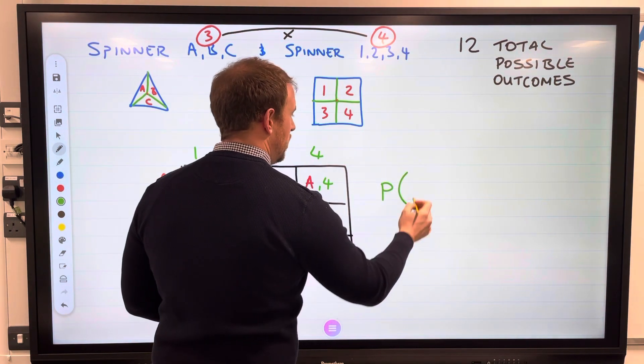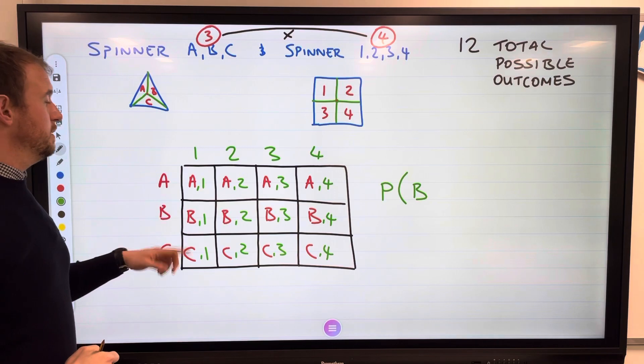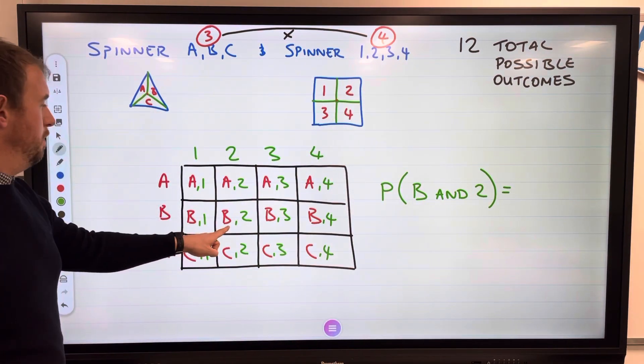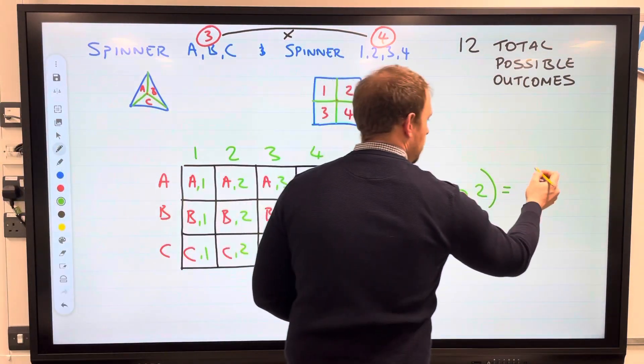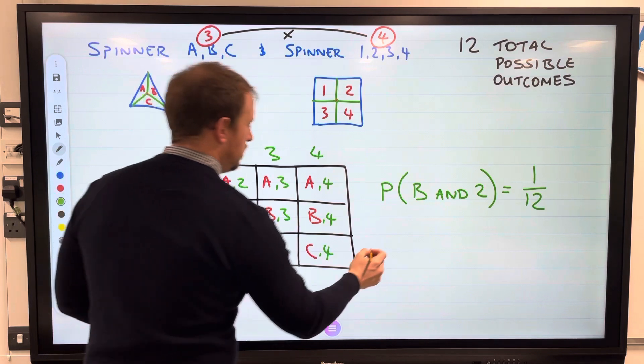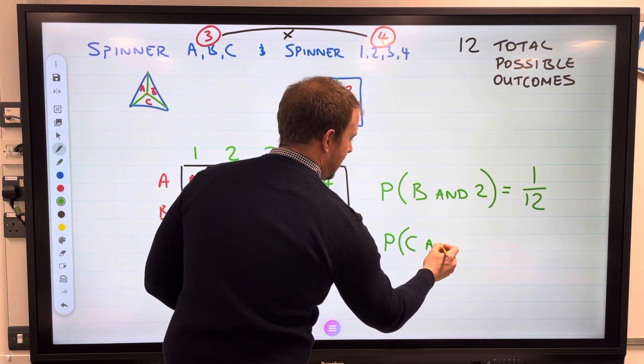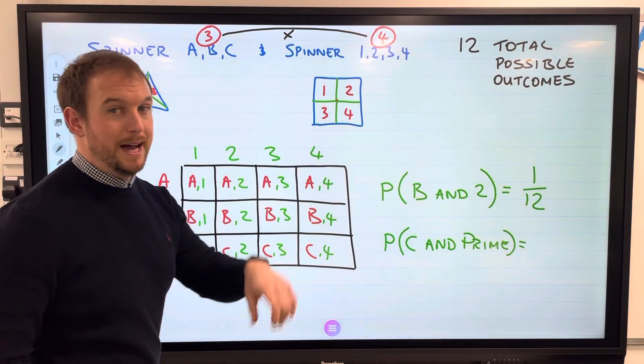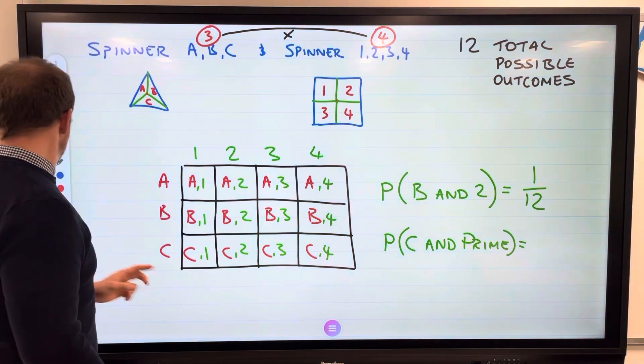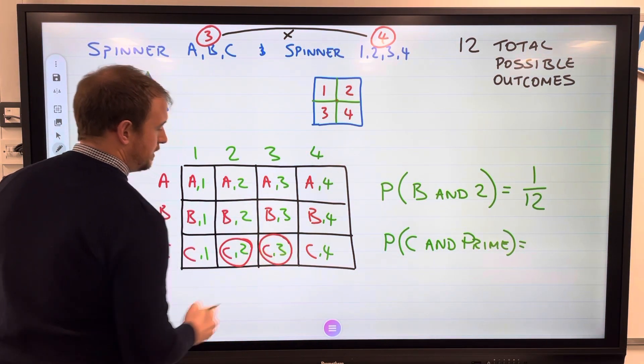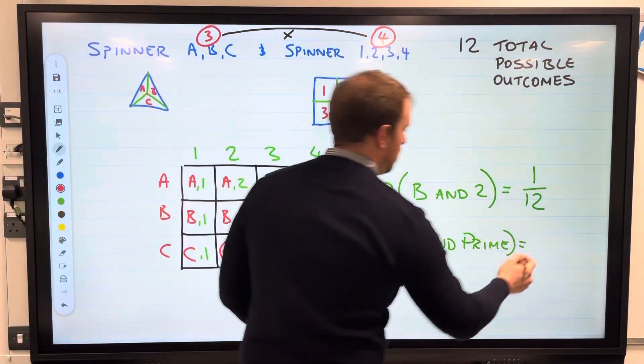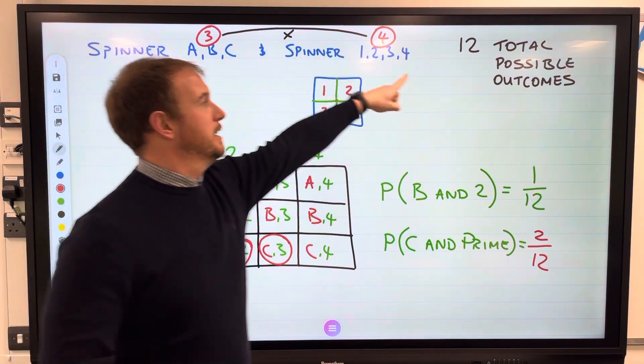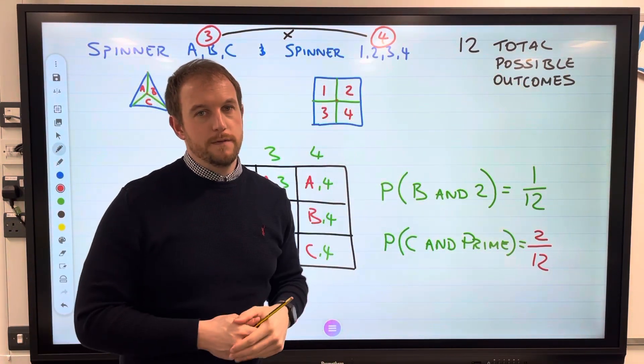Be careful with the questions. What's the probability of getting a B on the first spinner and a two? B and a two - you can see there's only one of them there, so one out of twelve. How about probability of C and prime? A prime number has exactly two factors. Two is prime, and that is a prime number as well. Four is not prime. So we have two out of twelve. Combined events: draw the table, find out how many total possible outcomes, be careful with what's being asked for probability. Hope it helps.